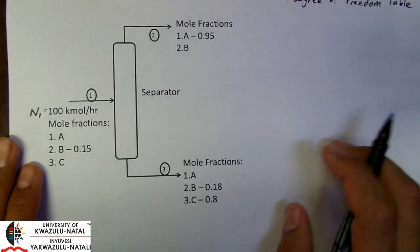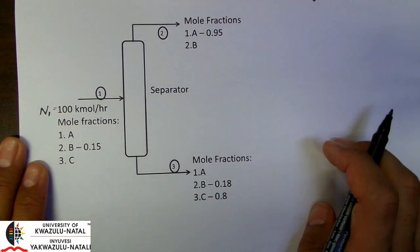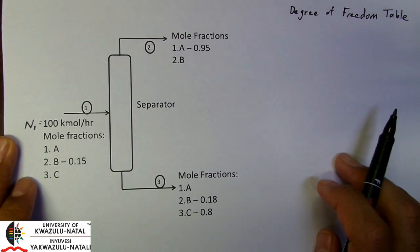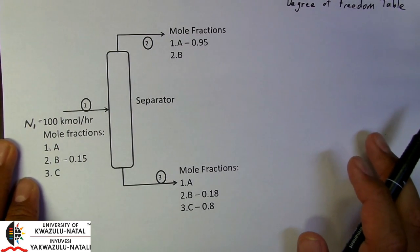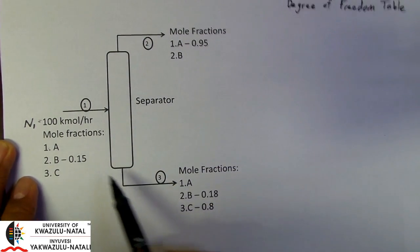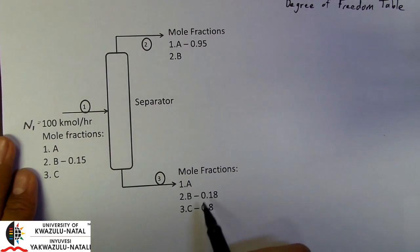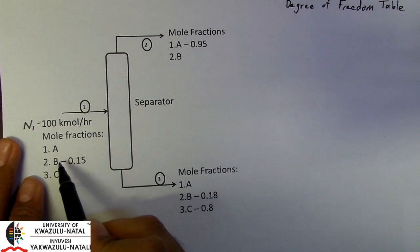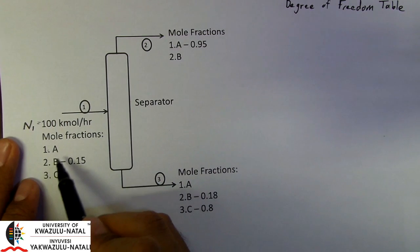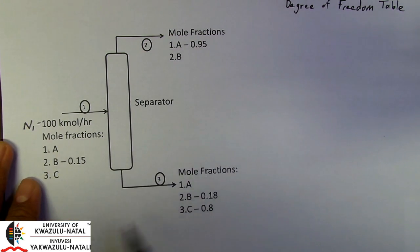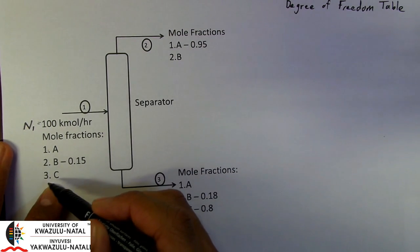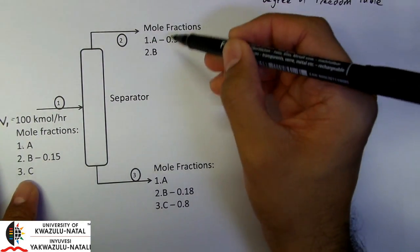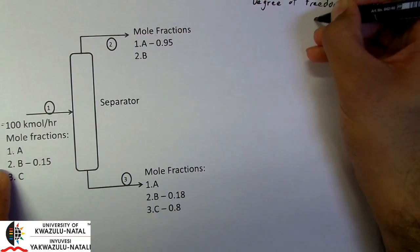The first thing that we need to look for is the number of independent variables associated with this particular unit, the separator. A quick and easy way to count the number of independent variables is to simply count the number of components in each stream, bearing in mind that the number of independent variables consists of s minus 1 compositions plus 1 flow. So we have 3 components here — that's 3 independent variables — another 3 here, and 2 here. So in total, we have 8 independent variables.